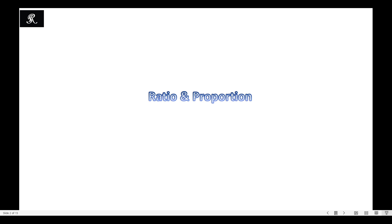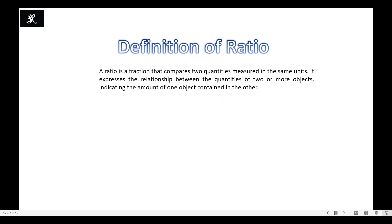Assalamualaikum. In this video I will discuss ratio and proportion. A ratio is a fraction that compares two quantities measured in the same units. It expresses the relationship between the quantities of two or more objects, indicating the amount of one object contained in the other. When you express two objects in a ratio, first of all you have to use the same units.